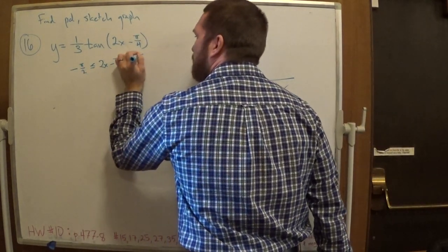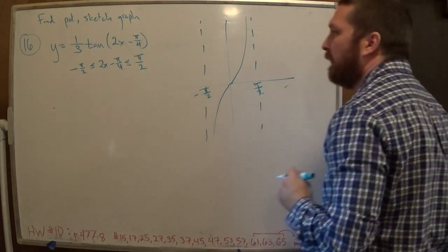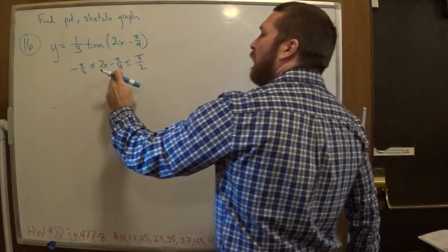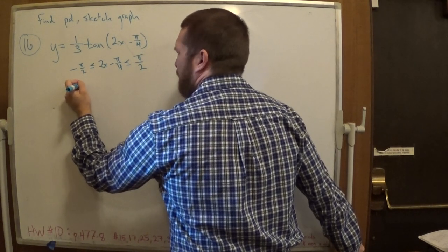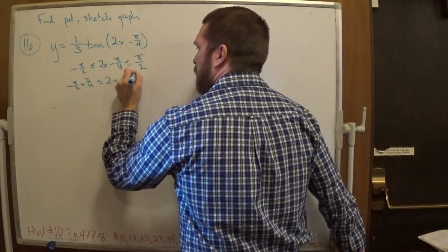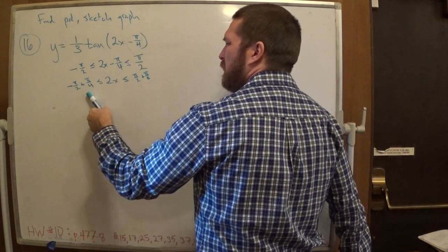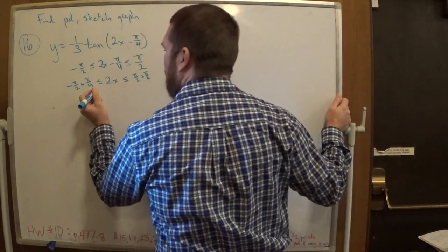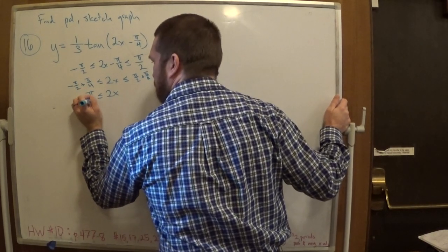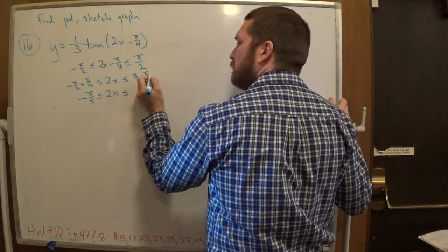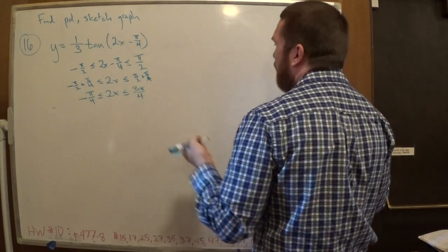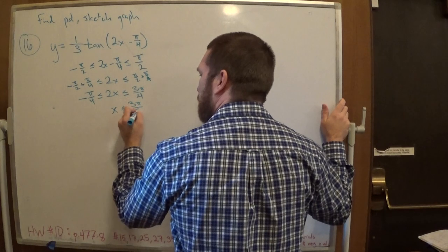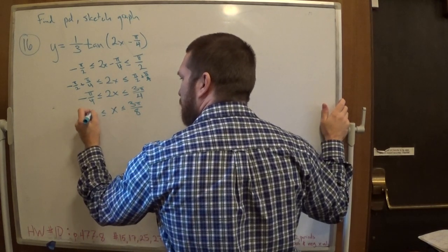So we set up -π/2 < 2x - π/4 < π/2 to find one full period in terms of x. Adding π/4 to all sides: -π/2 + π/4 = -π/4, and π/2 + π/4 = 3π/4. So -π/4 < 2x < 3π/4. Then dividing by 2: -π/8 < x < 3π/8. That gives us one full period.